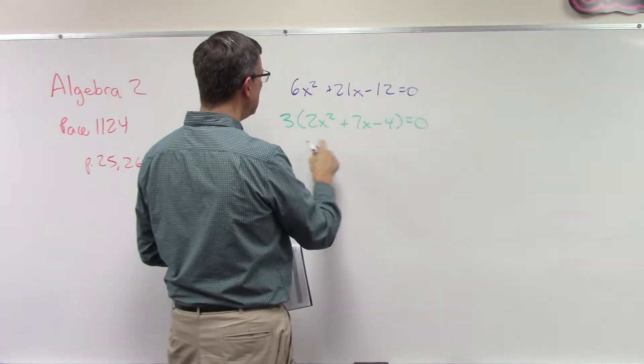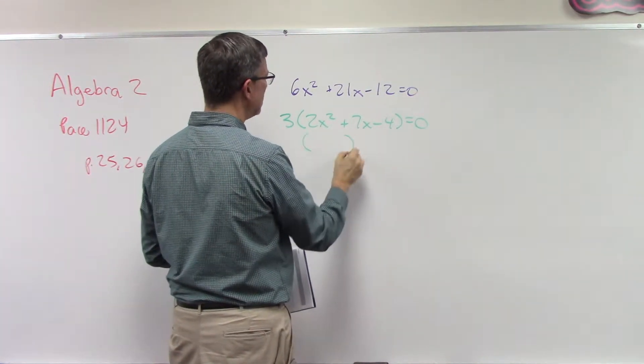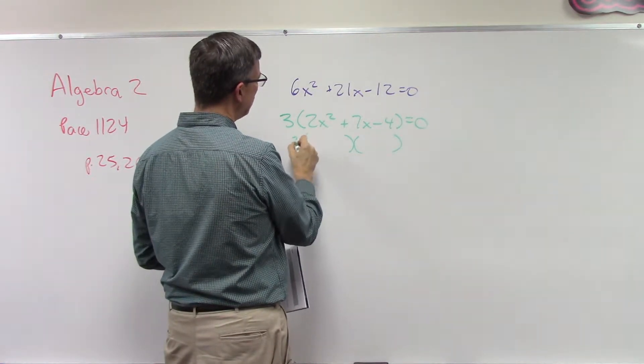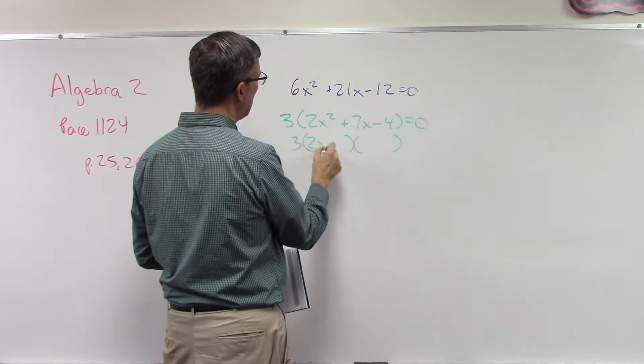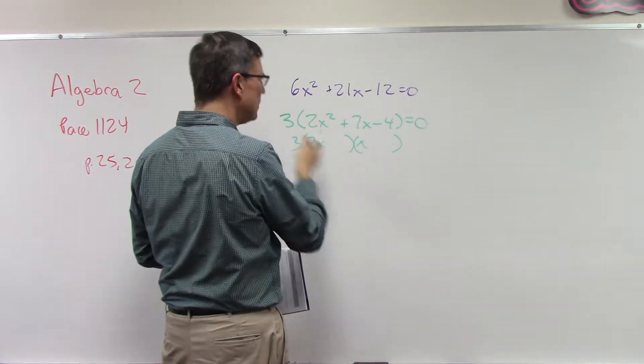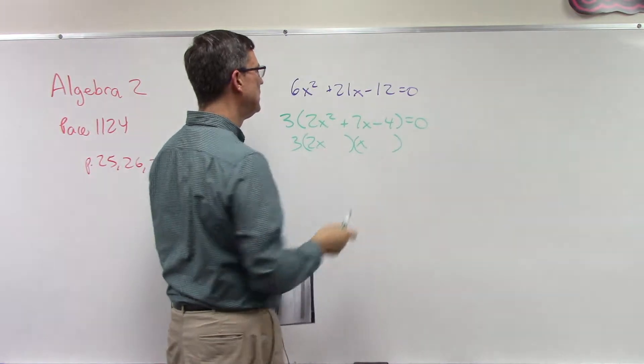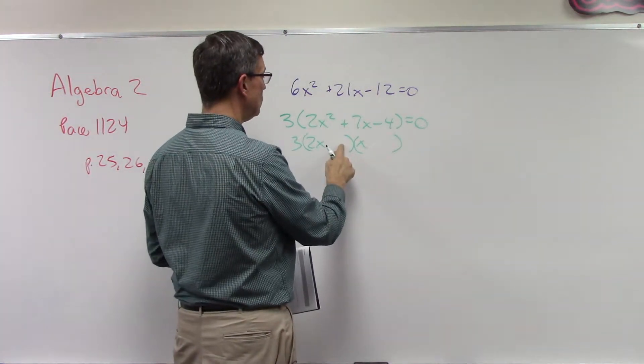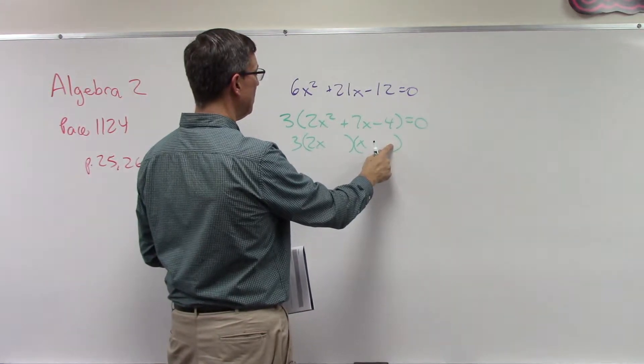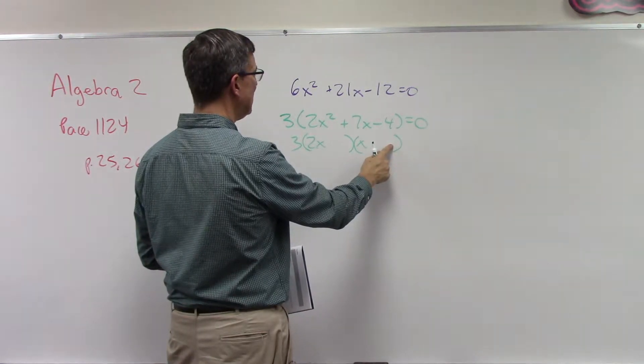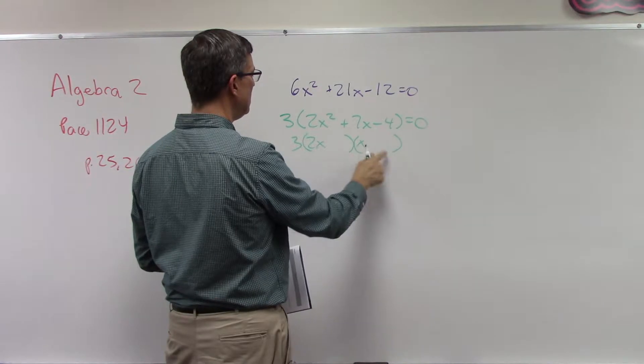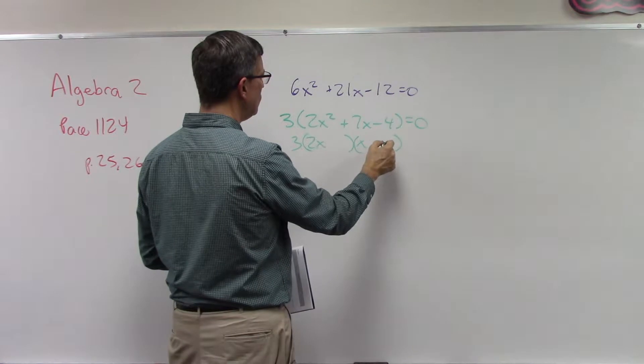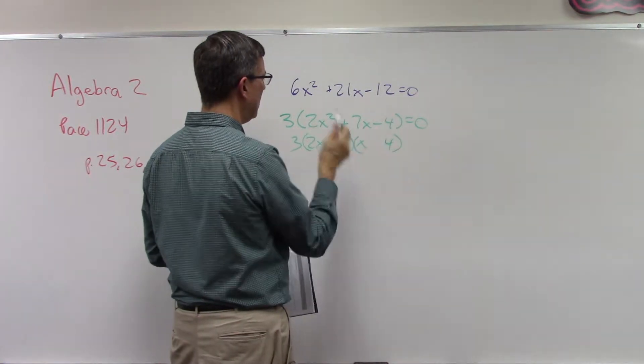Again, even as a teacher, I cannot skip this step and do it in my head, so you shouldn't either. You should write this out. Now that you see this, you can factor this to be 2 parentheses, so we can bring the 3 down. We have 2x, we have x, and then we have to think about what two numbers multiplied together would give me 4. Might be 2 times 2, but that's gonna give me 4, could give me a 6 here. What if I do 4 and 1?